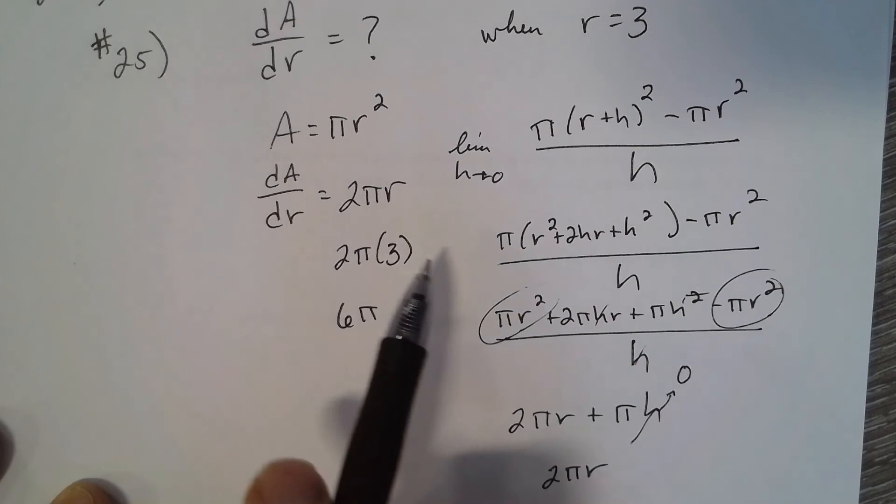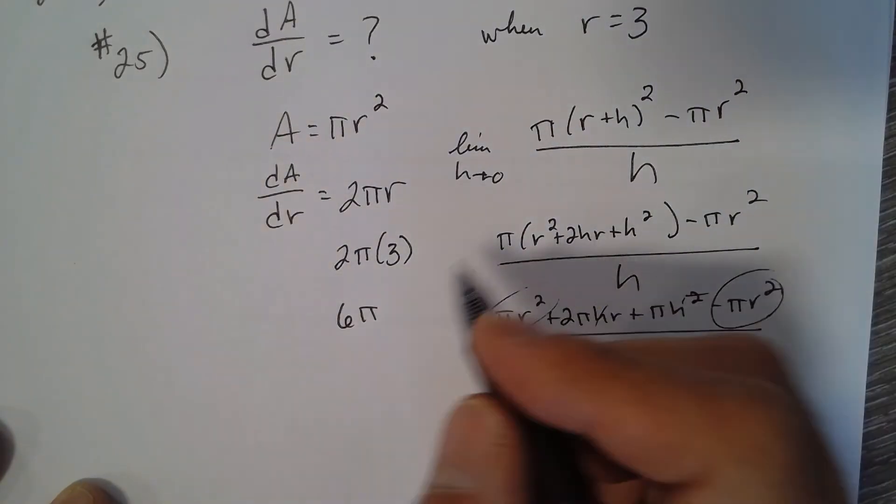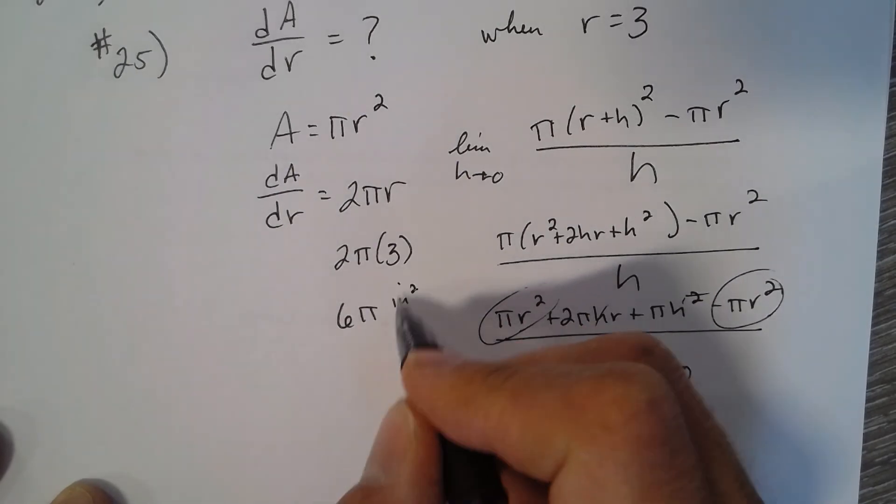Since radius is in inches, the rate of change of the area would be 6π inches squared per inch.